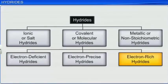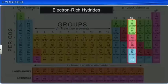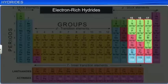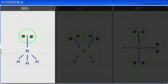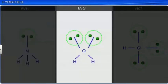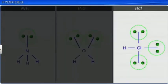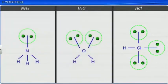Electron-rich hydrides have excess electrons which are present as lone pairs. The elements of group 15, 16, and 17 form such hydrides. For example, NH3 has one lone pair on nitrogen. H2O has two lone pairs on oxygen. And HCl has three lone pairs of electrons on chlorine. Due to the presence of excess lone pairs, these hydrides behave as Lewis bases, which are electron donors. These hydrides also form hydrogen bonds between molecules due to the high electronegativity of nitrogen and oxygen.